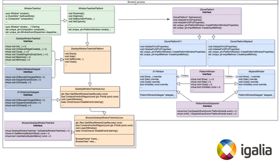WindowTreeHost and PlatformWindow are both interfaces. They both have implementations that are created by factories. At the Ozone side, it's quite complicated — just look at the left half of the diagram. To work with Ozone and its platform windows, there is the WindowTreeHostPlatform. For platforms that have a desktop, it's extended as DesktopWindowTreeHostPlatform. And for Linux platforms, it is further subclassed by DesktopWindowTreeHostLinux. Please note that DesktopWindowTreeHost implements some interfaces, for example PlatformWindowDelegate — we will need that a bit later.